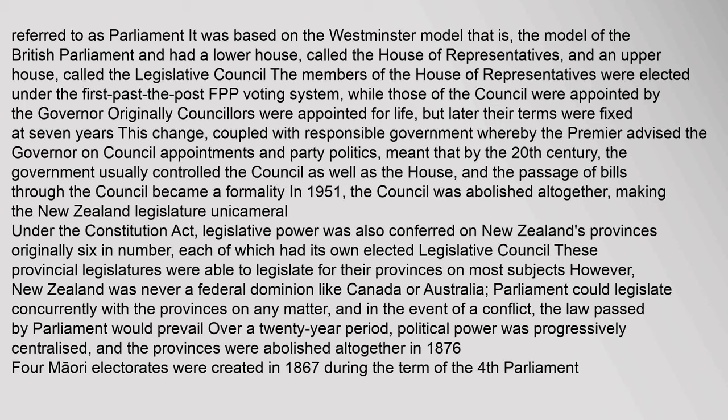These provincial legislatures were able to legislate for their provinces on most subjects. However, New Zealand was never a federal dominion like Canada or Australia. Parliament could legislate concurrently with the provinces on any matter, and in the event of a conflict, the law passed by Parliament would prevail. Over a 20-year period, political power was progressively centralised, and the provinces were abolished altogether in 1876. Four Māori electorates were created in 1867 during the term of the Fourth Parliament.